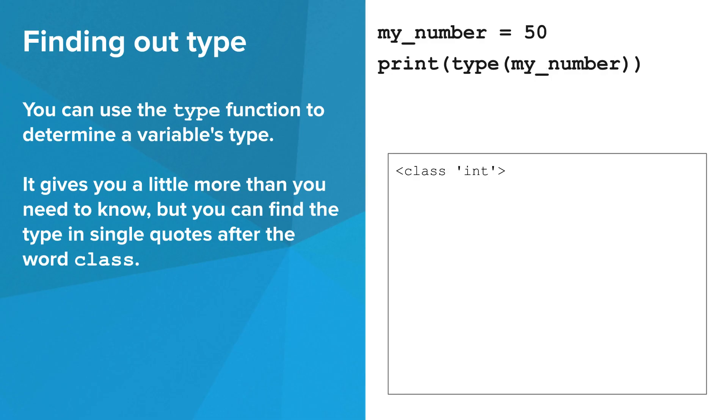Now we can see the type function being used on the variable my_number, and sure enough, the type is int. So that's the basics of variables in Python. In future videos, you'll learn how to do more interesting things with a variable than just print its value or its type.